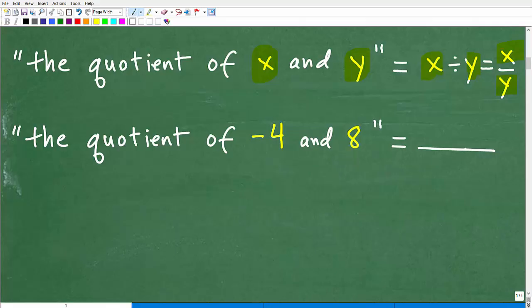So the quotient of negative four and eight is equal to what? Well, I purposely didn't write it down because I want you to go ahead and interpret the definition of the quotient. So some of you are saying, okay, well, let me just kind of look at this real quick. Is it negative four over eight or maybe is it eight divided by negative four? Which one is it? Is it negative four divided by eight or is it eight divided by negative four?